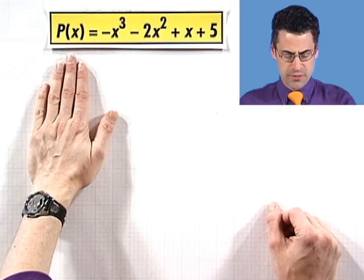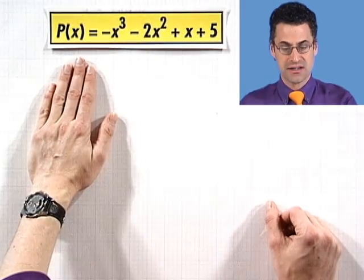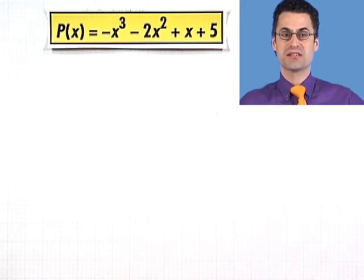Let's take a look at an example polynomial function and see that we can say a lot. Here's the polynomial function: p(x) = -x³ - 2x² + x + 5.